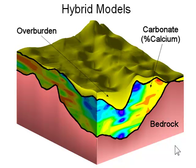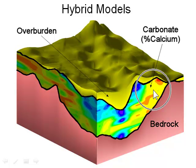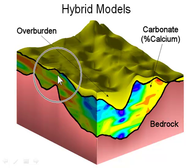In practice, numerical models of many geological environments employ a combination of gridding and block modeling. For example, a deposit may have a discrete top and bottom, but the grade may vary vertically between these two surfaces, as shown by this hybrid model. In this example, the overburden and bedrock have been modeled with two-dimensional gridding techniques, whereas the relative calcium-magnesium content for a carbonate sandwiched between these two units was modeled with a three-dimensional block modeling method. Thanks for watching.